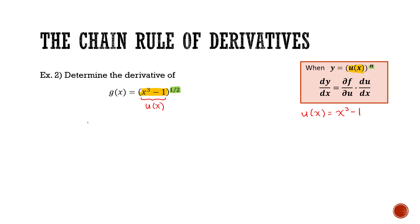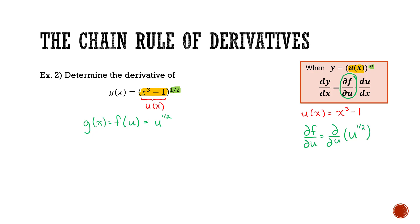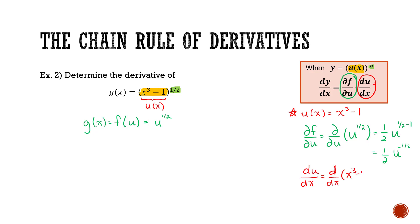By substituting u into the expression, g(x) becomes a function of u: u — that is, x cubed minus 1 — all to the power of one half. I then find the partial derivative ∂f/∂u, which is the derivative with respect to u of u to the power of one half. So I take the exponent: one half times u to the power of one half minus 1, giving me one half times u to the power of negative one half. Next, I'll do the derivative du/dx: the derivative with respect to x of x cubed minus 1, which gives 3x squared.